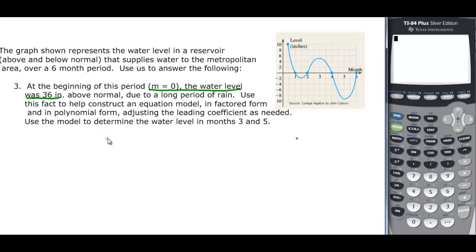You find your x-intercepts and that's going to be x minus one and x minus two, and then we have another one at four so x minus four, and we have another one at six so x minus six.